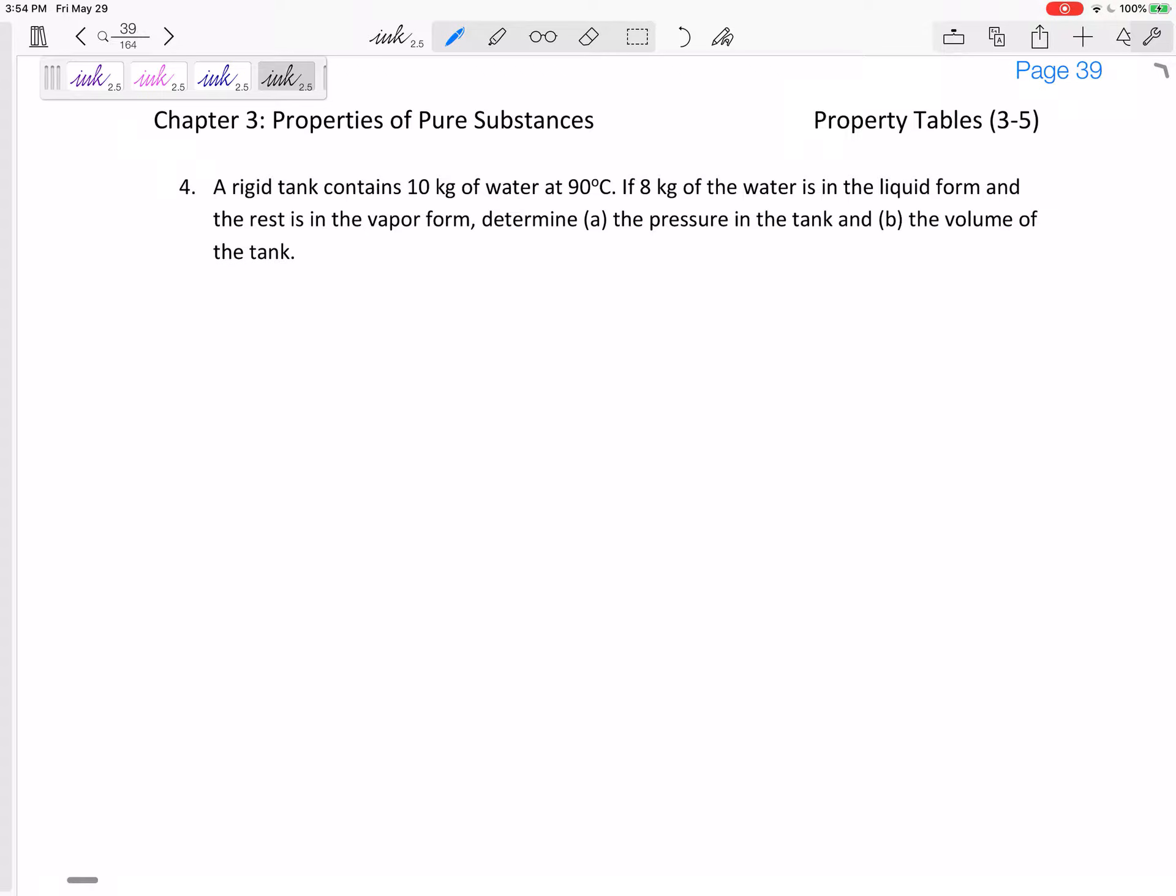So what property table should I go to? It's in SI units, so I'm in Appendix 1. It is water, so I'm in four, five, six, seven. Some of it is liquid, some of it is vapor. It's a liquid vapor mixture. In order for it to be both liquid and vapor mixture, it's saturated liquid, saturated vapor. We're in a saturated table, four or five, and we're given temperature, so the temperature is table A4. Table A4 is the table that I'm going to go to.